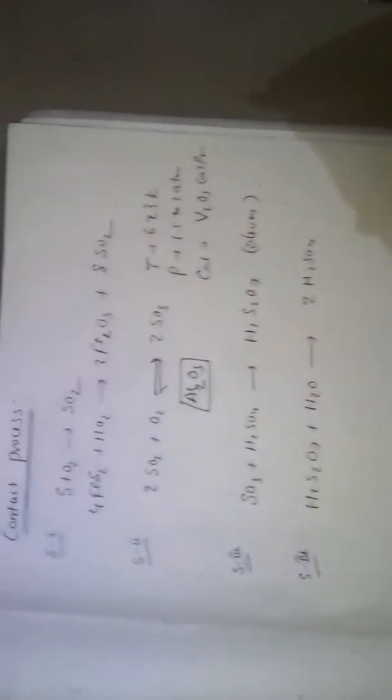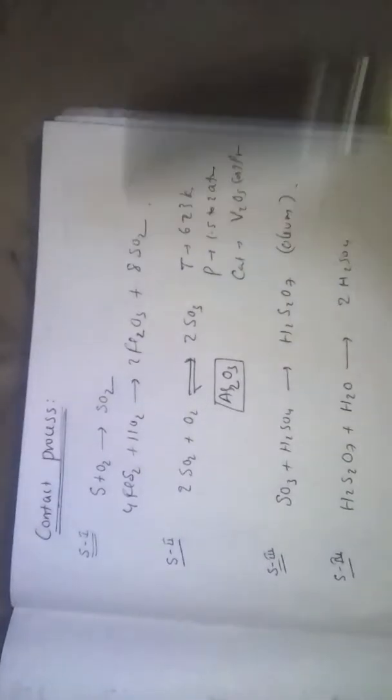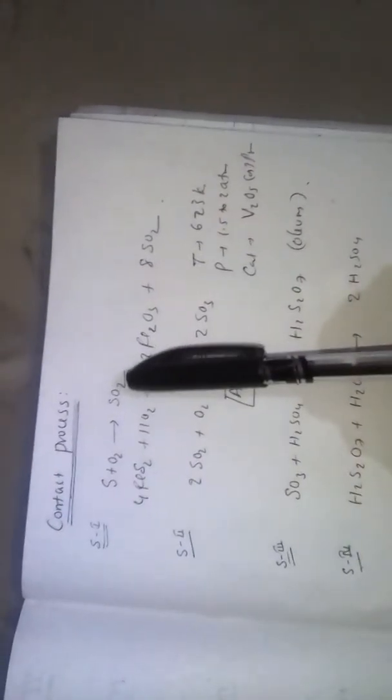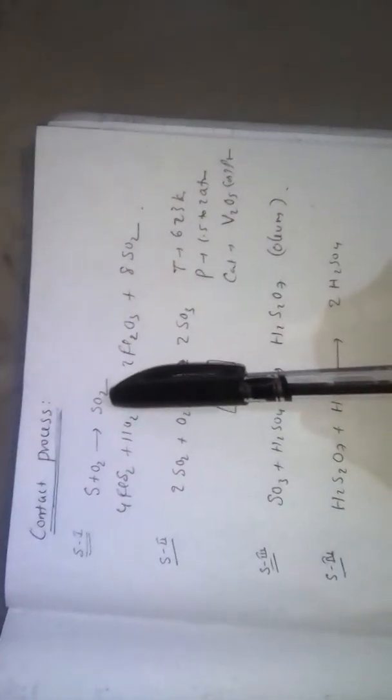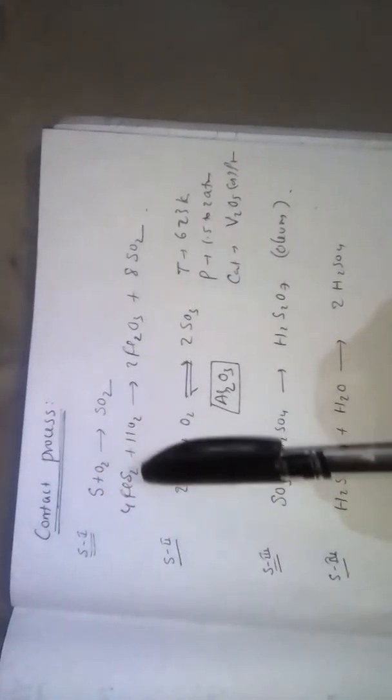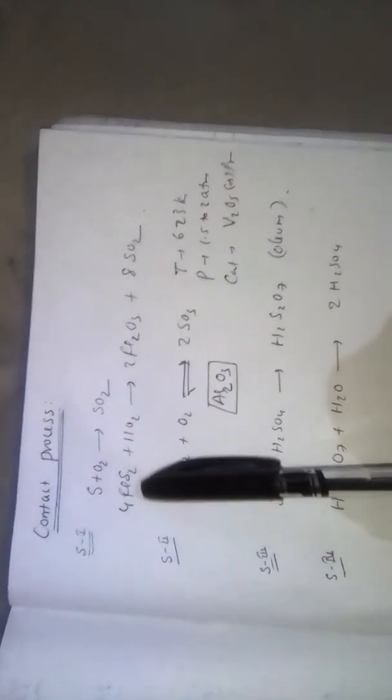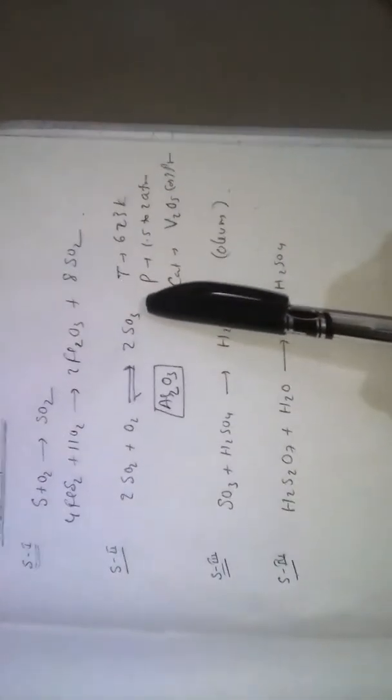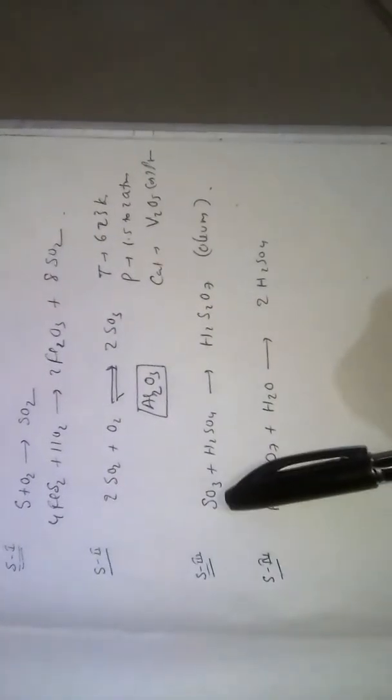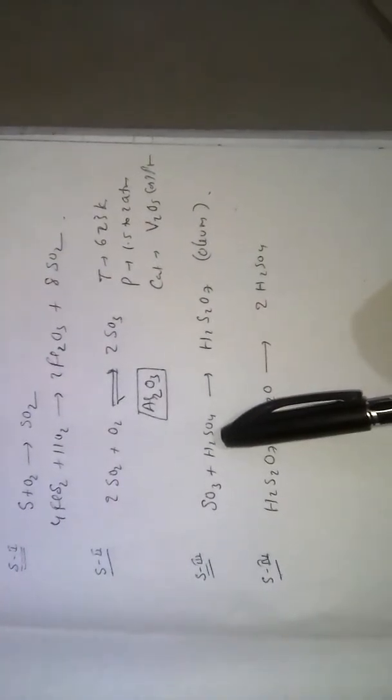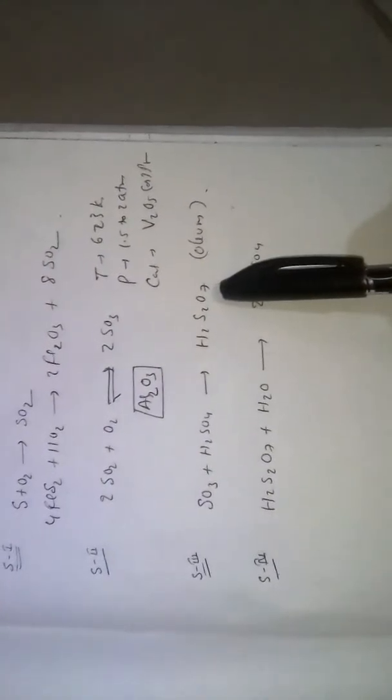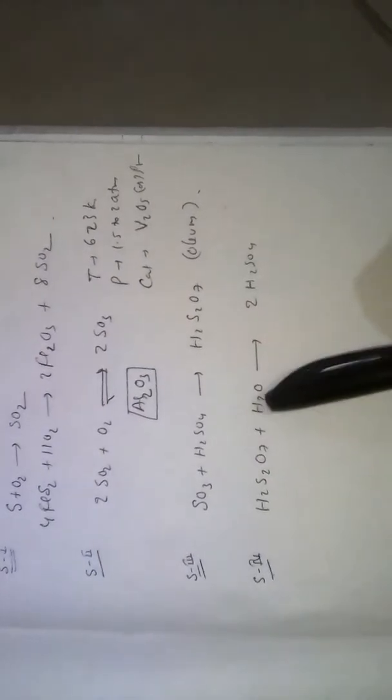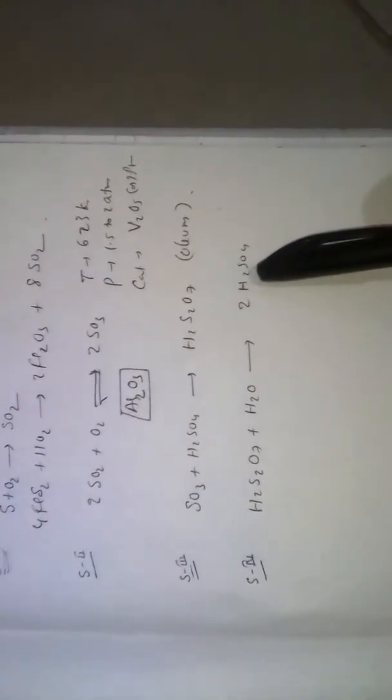So this is the process of preparation of sulphuric acid by contact process. It involves 4 steps. In step 1, you prepare sulphur dioxide by combustion of sulphur or sulphide ores. In step 2, SO2 is converted into SO3. In step 3, SO3 dissolved in sulphuric acid forms H2S2O7. In step 4, H2S2O7 dissolved in water gives sulphuric acid.